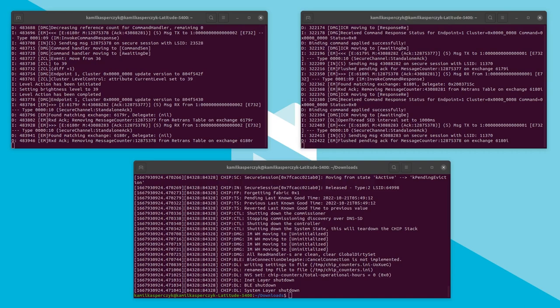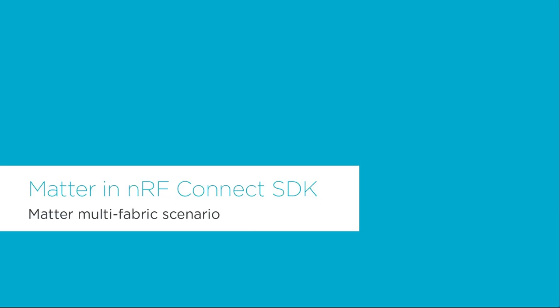Now, after setting up the Matter testing environment and verifying Matter over Thread communication is working, let's move to a demonstration of another scenario proving Matter interoperability. We are going to test a multi-fabric feature that allows joining a particular Matter device into several different and completely independent Matter fabrics. This way it is possible to set up a few Matter fabrics created by different ecosystem providers and control the same Matter accessory through all of them.